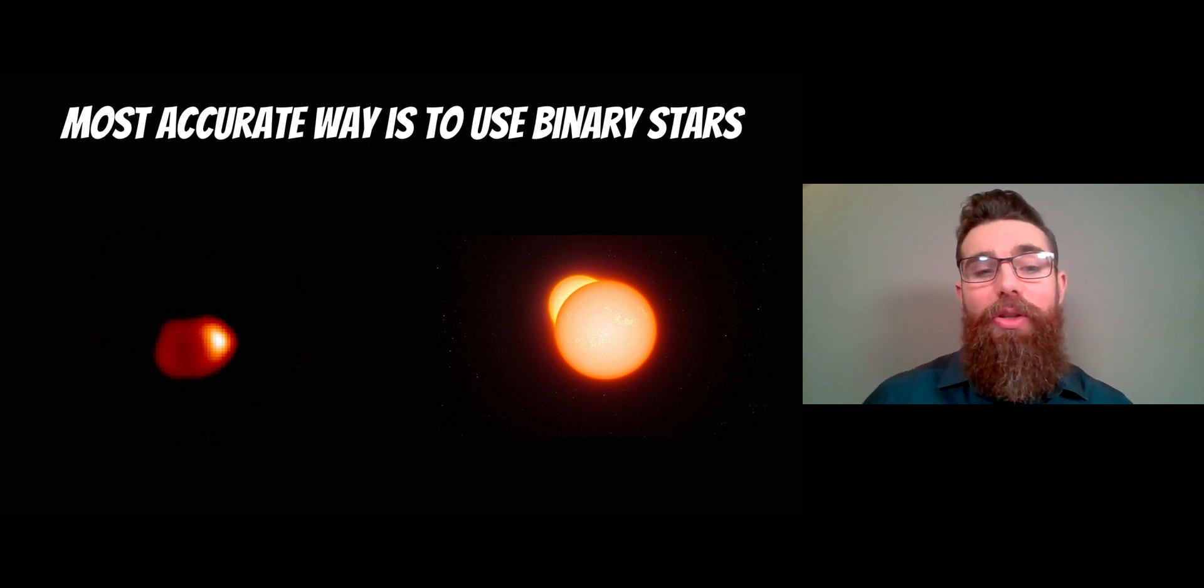This is where you have two stars orbiting a common center of mass. On the left hand side you can see the star system Algol, where you've got a star orbiting around the larger one in the center.